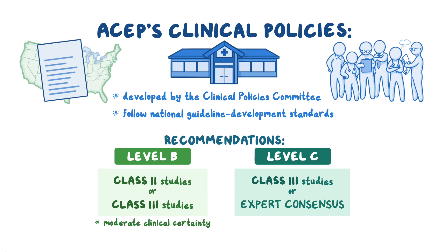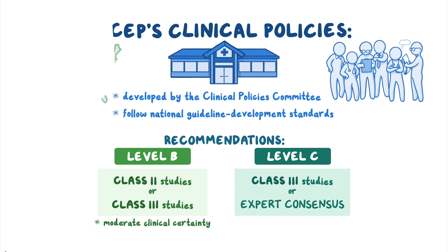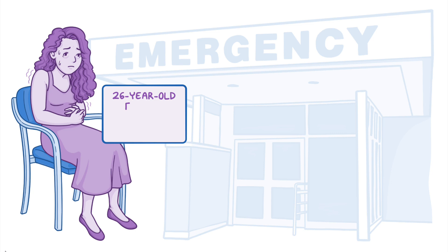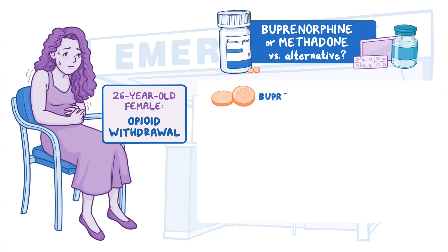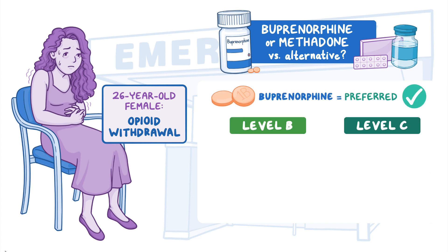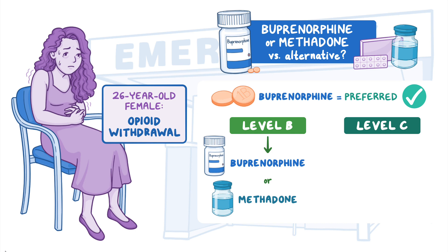Let's look at the opioid recommendations using patient scenarios. A 26-year-old female presents to the ED with opioid withdrawal. What is the most effective treatment strategy — buprenorphine, methadone, or an alternative agent? Buprenorphine is the preferred option from Level B and C recommendations. The Level B recommendation is to treat the patient with buprenorphine or methadone, as these agents are more effective compared to non-opioid adjunctive strategies such as clonidine. The Level C recommendation is to preferentially treat opioid withdrawal in the ED with buprenorphine instead of methadone.